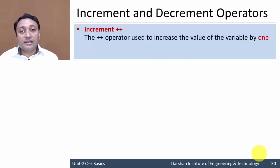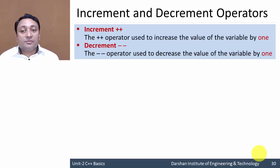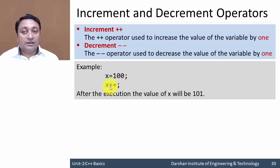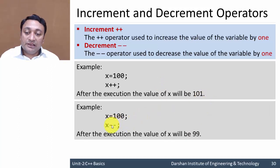Now let us discuss increment and decrement operators. The increment operator is used to increase the value of a variable by 1, and the decrement operator decreases the value by 1. If x equals 100 and you want x = x + 1, you can write the increment operator instead. After execution, x will be 101. Similarly, the decrement operator writes x-- instead of x = x - 1.